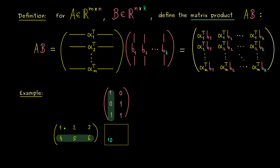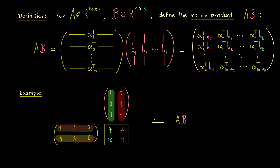Then in the next step, you do it for all the other combinations as well. So here we would have 1 times 1, plus 2 times 0, plus 3 times 1, hence we simply get 4. Then let's continue: 1 times 0, plus 2 times 1, plus 3 times 1, therefore this is 5. And finally the last combination gives us 11. So in summary, the matrix product AB is a 2 times 2 matrix with entries 4, 5, 10, 11.